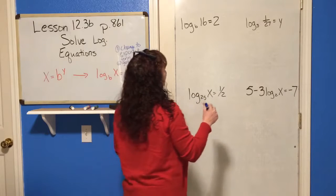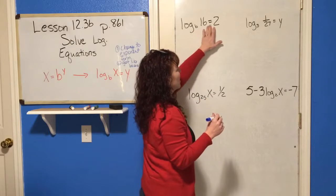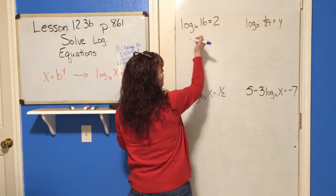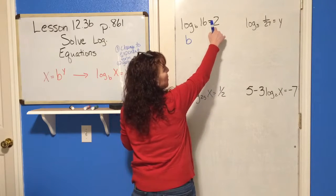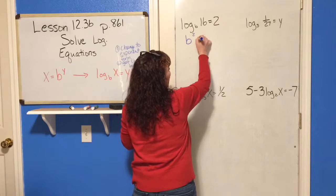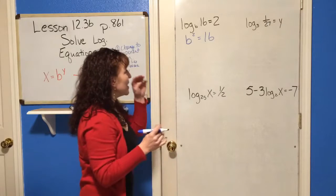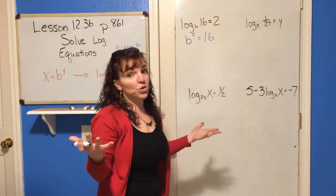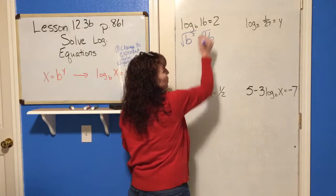So if we're going to change this log, log base b of 16 equals 2, we need to work around our base b, our exponent is the answer, remember, our exponent is 2, and that's going to equal 16. So now in this case, we've got something squared equals 16, well in order to solve that, to get rid of the squared, you're just going to take the square root.